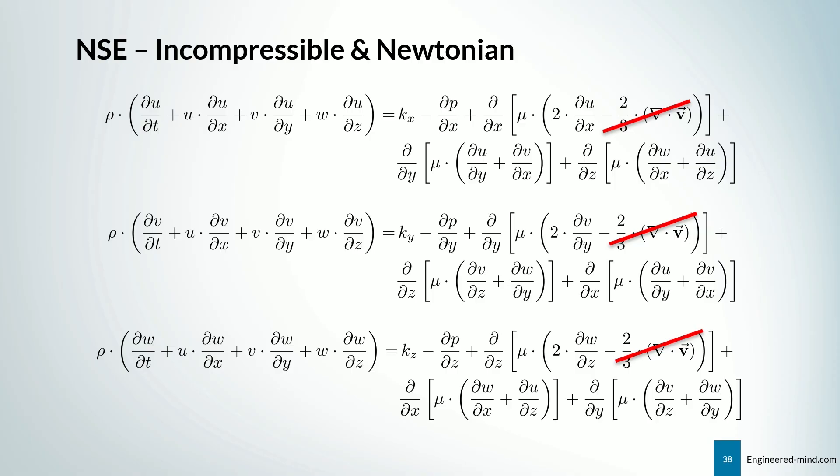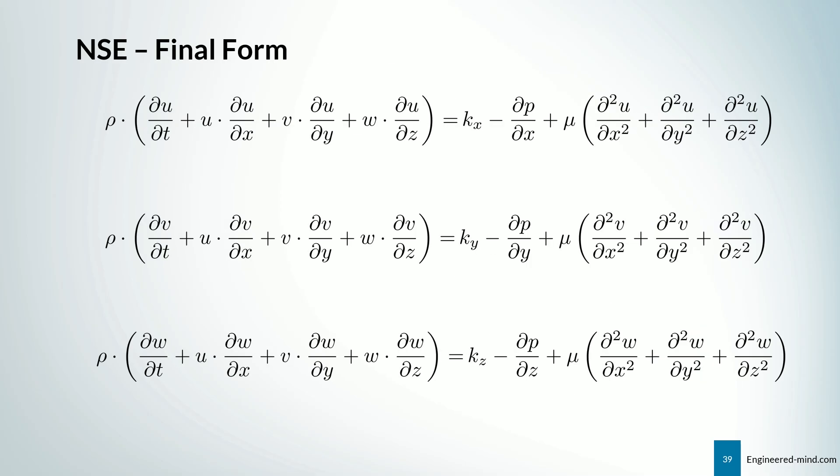Here you can now see the final general form of the Navier-Stokes equations. And if we deal with an incompressible flow, we can just take the assumption that the divergence of our velocity field is equal to zero. So that means that the terms, as you can see right here, drop out. And we end up with our final form that looks like this.